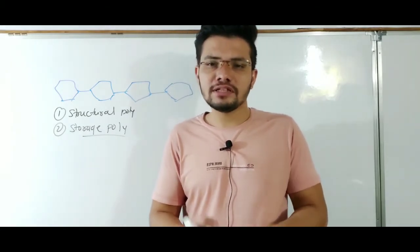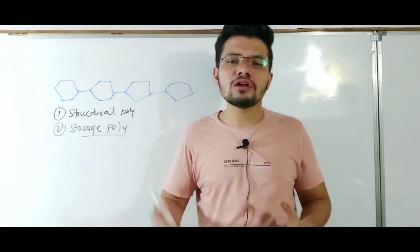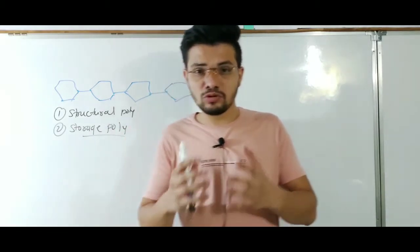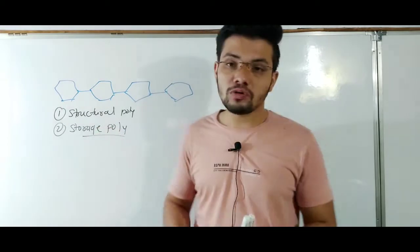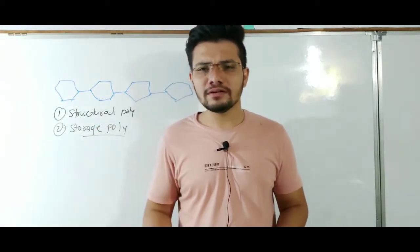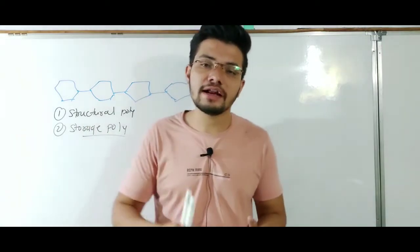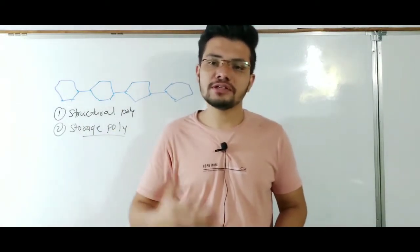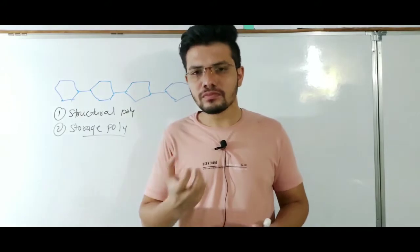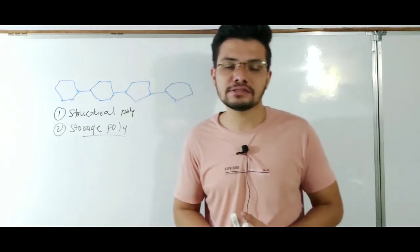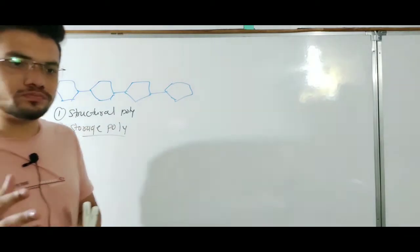Storage polysaccharides are the stored form of energy — they store energy, or we can say they store small sugar units, and they are formed when we are consuming a lot of sugars. One of the best examples of storage polysaccharides is glycogen. Whenever cells need energy, they break down these storage polysaccharides to get monosaccharide units, and energy is taken from those glucose molecules.